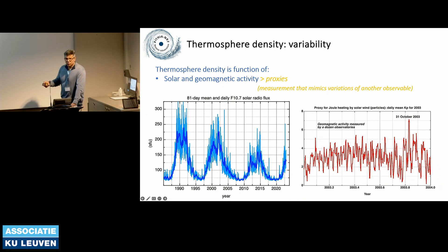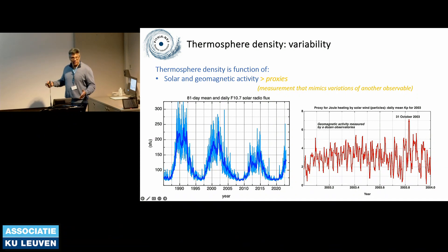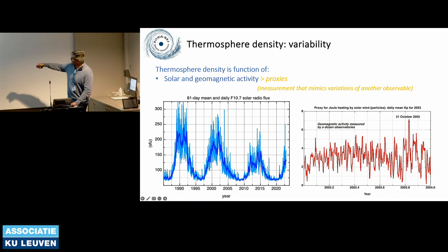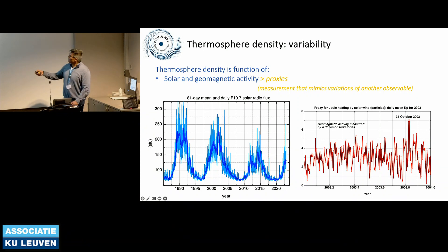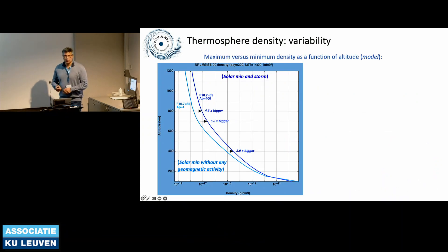We also have variability due to solar activity and geomagnetic activity. We have modulation with the 11-year cycle which modulates your density. The same is true for geomagnetic activity — this shows daily Kp during a very active part of the solar cycle. The variability is very rapid, and this big geomagnetic storm is the Halloween storm of 2003. Both Kp and F10.7 are proxies — a measurement that mimics variation of another observable. Tomorrow I'll show exactly what that means and how we try to get the best possible proxy.